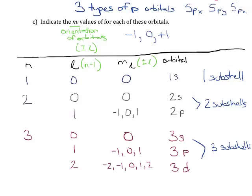We should also be able to figure out how many electrons go in each level. If I've only got one sub-shell and it's a 1s, I can only put 2 electrons in there. If I've got two sub-shells — a 2s and a 2p — the 2s can hold 2 electrons and the 2p can hold 6 electrons, so I'm looking at 8 total electrons. For the three sub-shells in the third energy level: the 3s holds 2, the 3p holds 6, and the 3d holds 10, giving 18 total electrons. This starts to fit with the columns we see on the periodic table, which helps us figure out electron configurations.